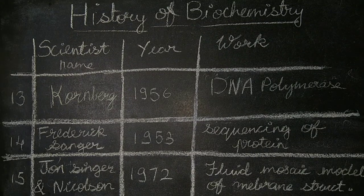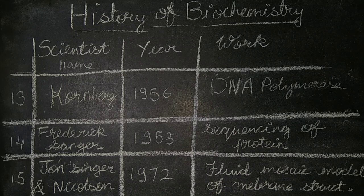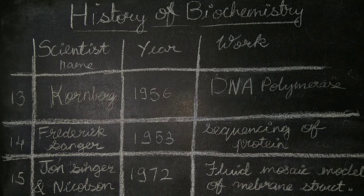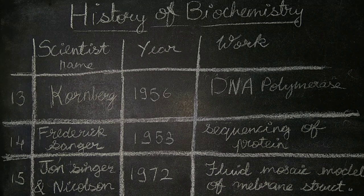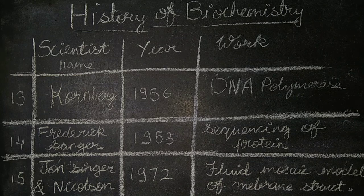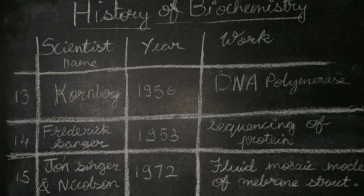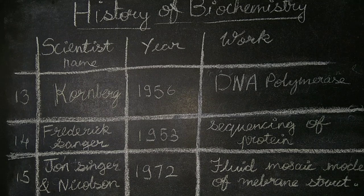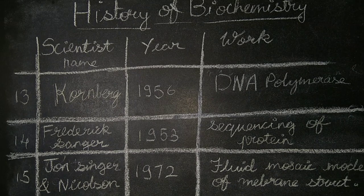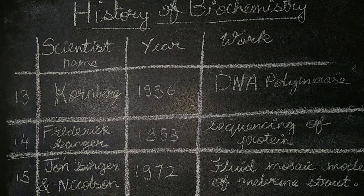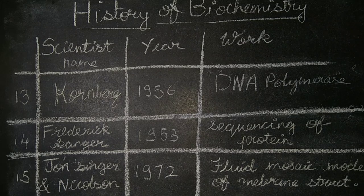Thirteenth is Kornberg in the year 1956, who discovered DNA polymerase. Fourteenth is Frederick Sanger in the year 1953, who sequenced proteins. Fifteenth is Singer and Nicolson in the year 1972, who discovered the fluid mosaic model of membrane structure.